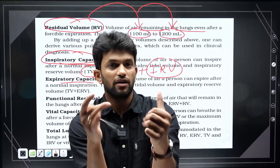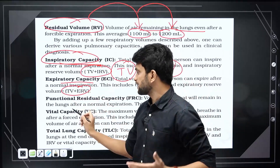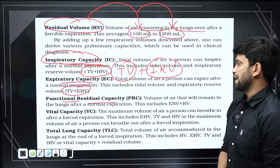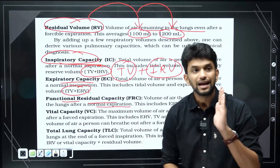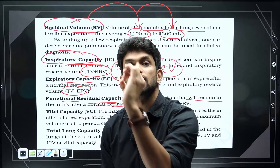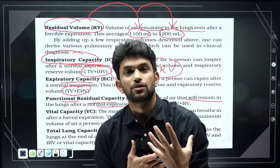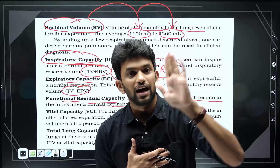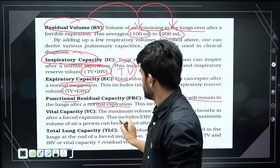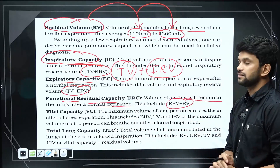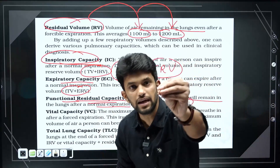Expiratory capacity is tidal volume plus expiratory reserve volume. Functional residual capacity is the volume of air that remains in the lungs after normal expiration — that is expiratory reserve volume plus residual volume.